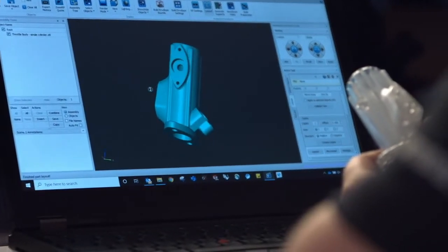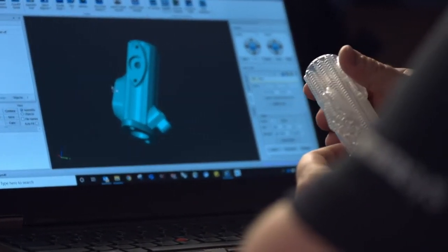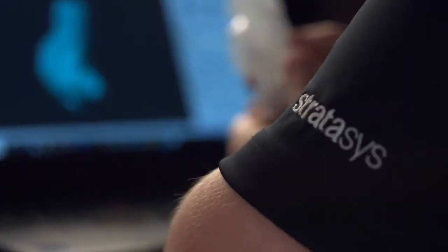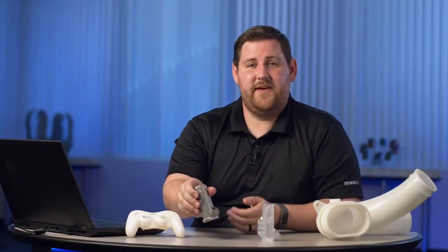By using additive manufacturing with stereolithography to create these patterns, you not only have the freedom of the molding process, but you have the freedom of the design process as well. So if you need a final metal part, you can use the V650 to get there faster and more economically.